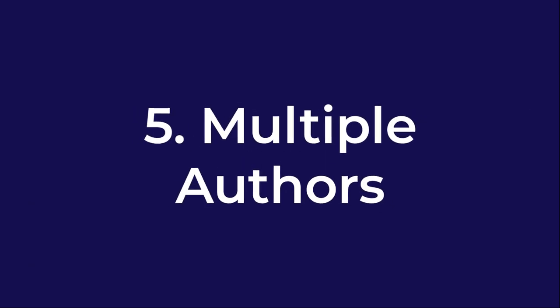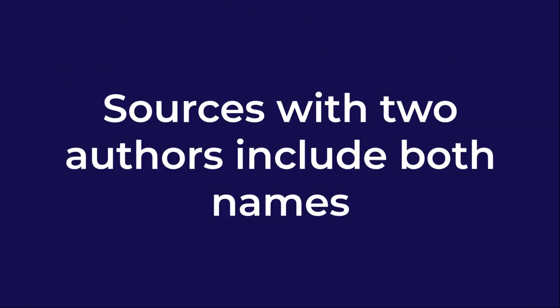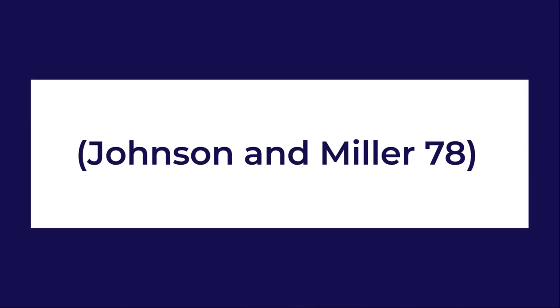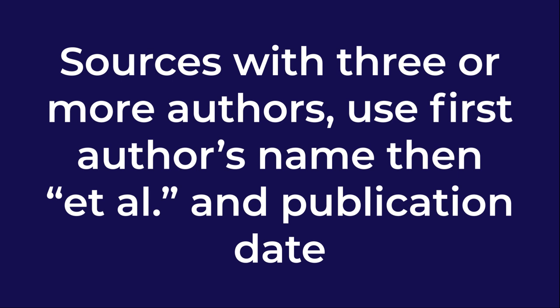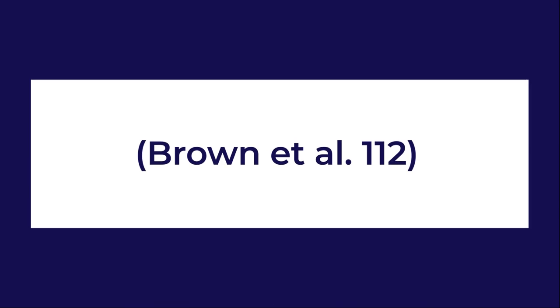Number five: multiple authors. For sources with two authors, include both names. For example: (Johnson and Miller 78). Make sure to fully write out the word AND. For sources with three or more authors, use the first author's name followed by et al. and the publication date. In et al., "et" should not be followed by a period — only "al." should be followed by a period. For example: (Brown et al. 112).